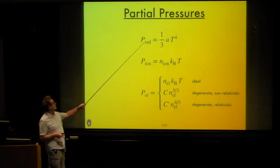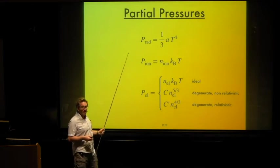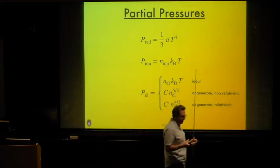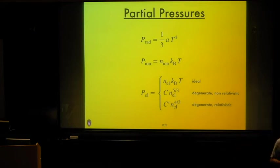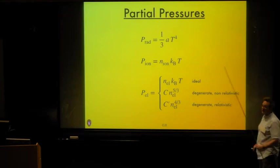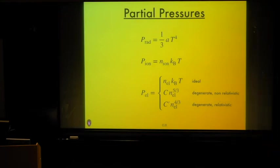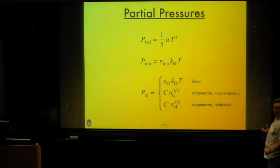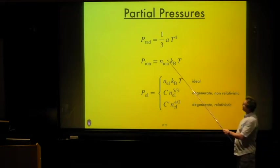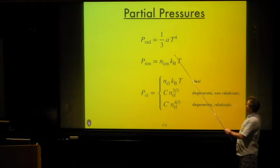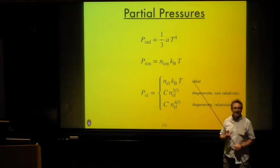The formula for radiation pressure is very straightforward. As long as we're in a well-thermalized medium where the mean free path is very short compared to typical temperature scale heights, the radiation field is isotropic and the radiation pressure is just (1/3) × a × T⁴, where a is the radiation constant. For almost all stars, ions behave like an ideal gas: the ion pressure is just the number density of ions times Boltzmann's constant times temperature.